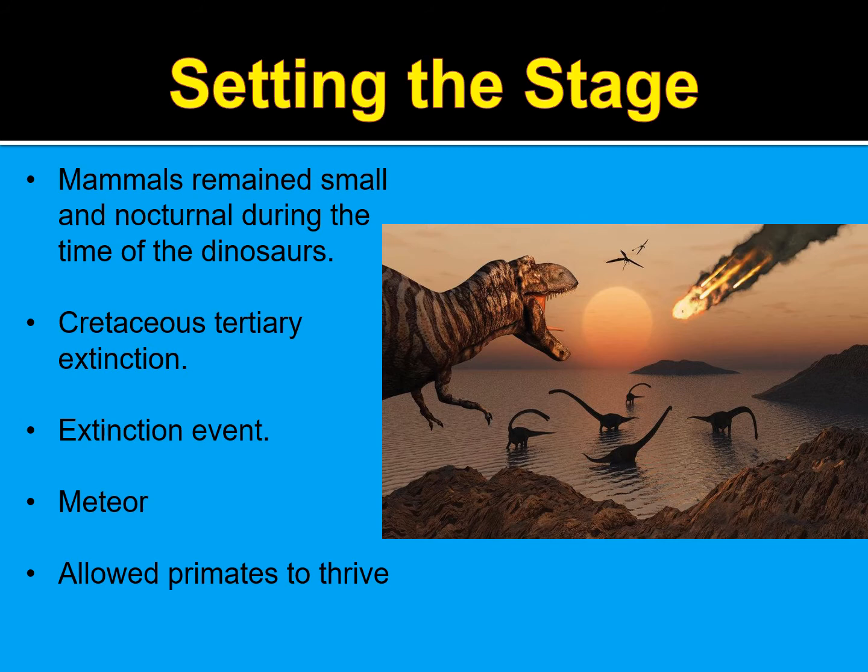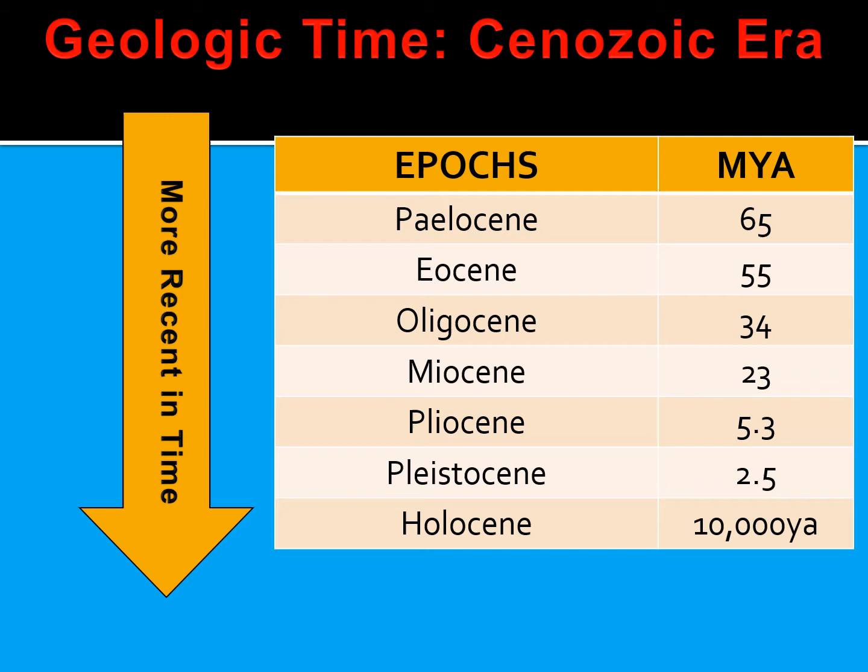Mammals remained very small and nocturnal during the time of dinosaurs. Then we had the Cretaceous-Tertiary extinction event, caused by a meteor and the subsequent fallout. That left room open for primates and other mammals to thrive. If the dinosaurs had never gone extinct, we may have never had primates, never had humans, or any of the larger mammals we see on the planet today.